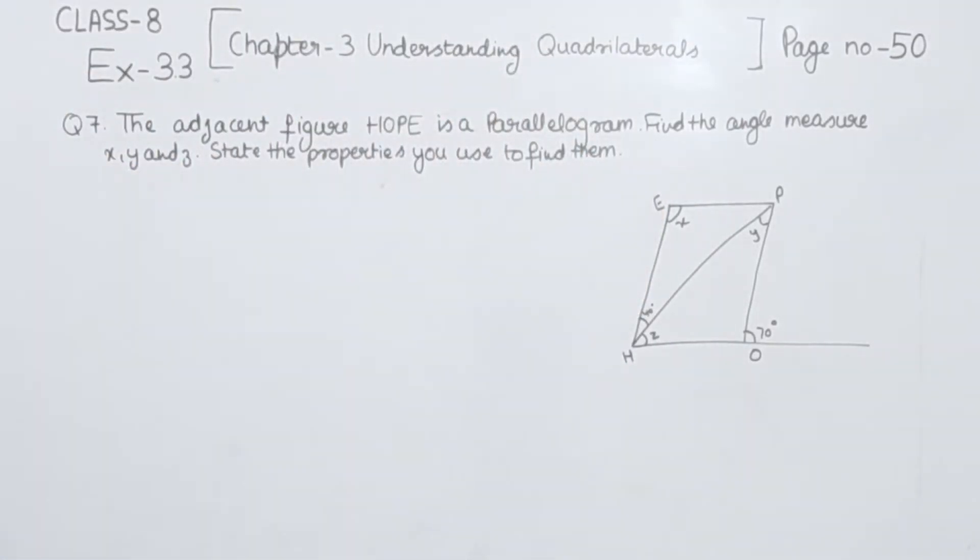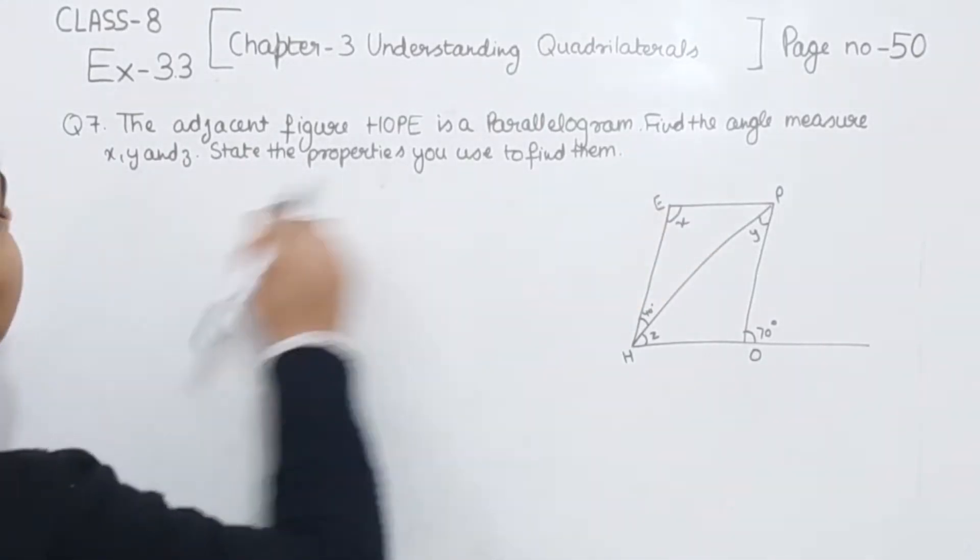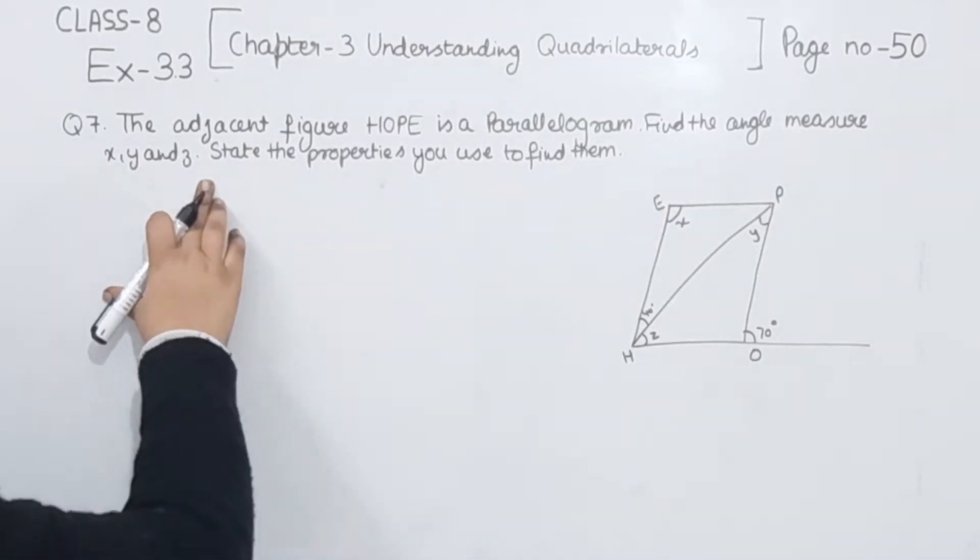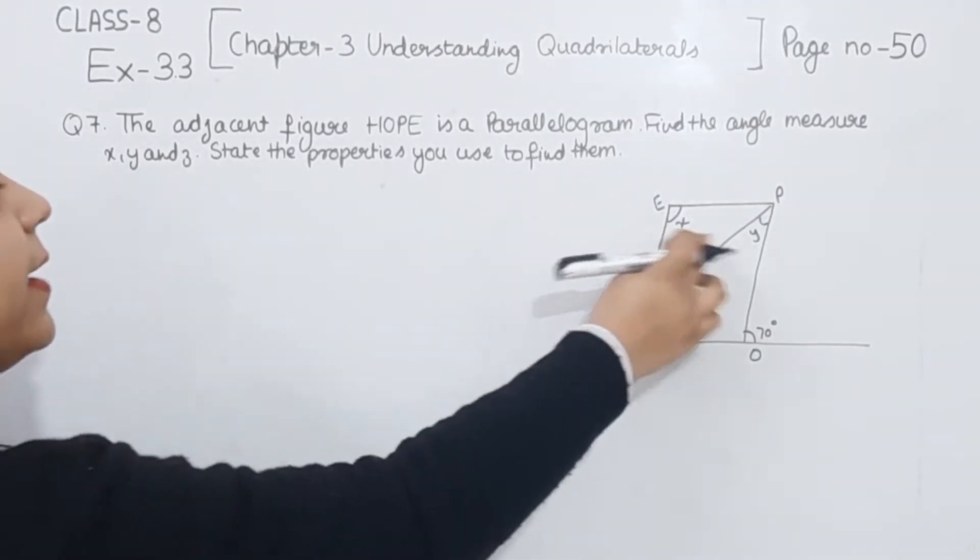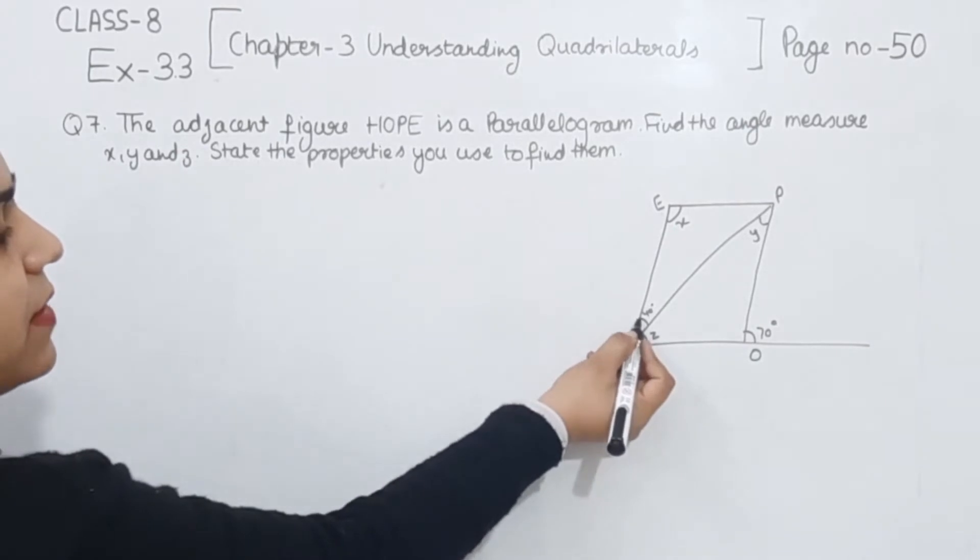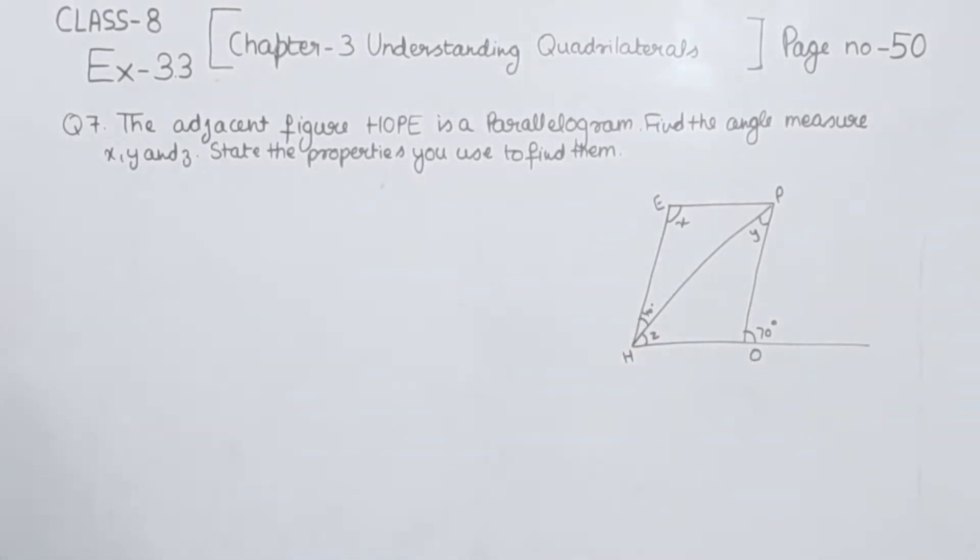The adjacent figure HOPE is a parallelogram. Find the angle measures of X, Y and Z. State the properties you use to find them. So this is X, Y and Z. This one is given as 40 and this exterior angle is equal to 70 degrees.